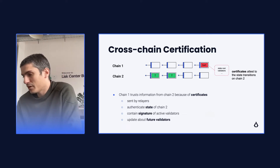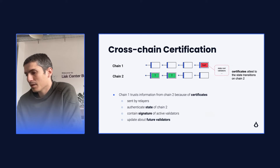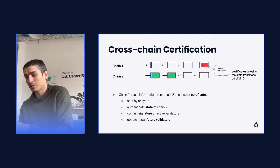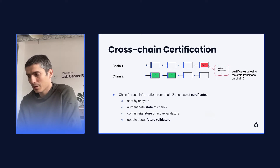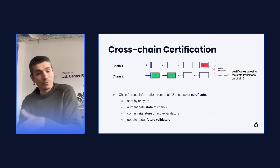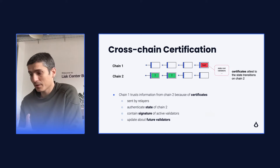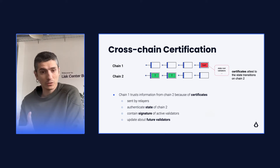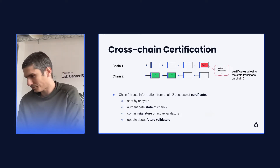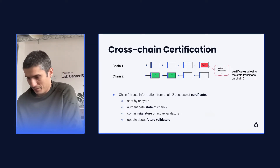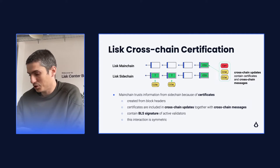In this example, on chain 2 we have two transactions and then a certificate created from a block after these two transactions happen, which is posted on chain 1. From then on, transactions on chain 1 can depend on the state of chain 2 after the transactions on chain 2 happen. And in this way, we have this information exchange and dependency between chains.